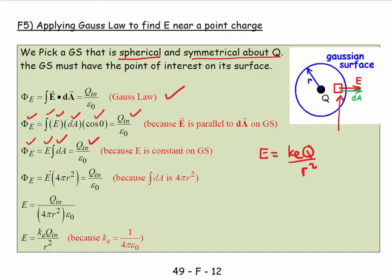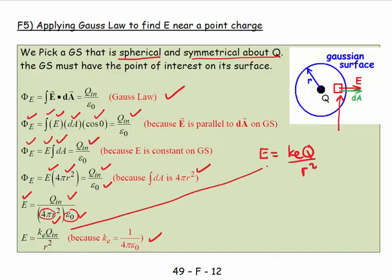The integral of dA is simply the surface area of the Gaussian surface. Because I picked a sphere, that's 4π r². So the flux equals E times 4π r², which equals Q inside over epsilon naught. Rearranging, the electric field equals Q inside over 4π r² epsilon naught. And since K_E equals 1 over 4π epsilon naught, this simplifies to E equals K_E Q inside over r² — the same equation derived previously using the analogy to Newton's gravitational law.